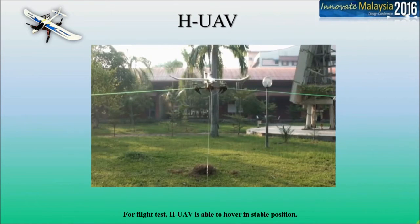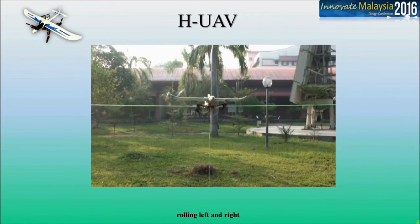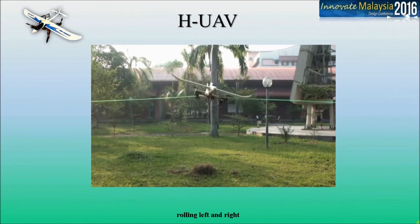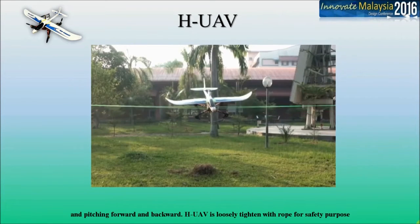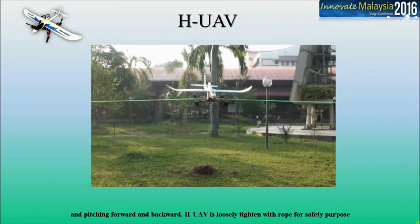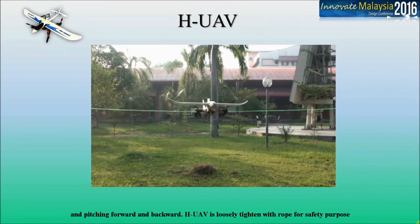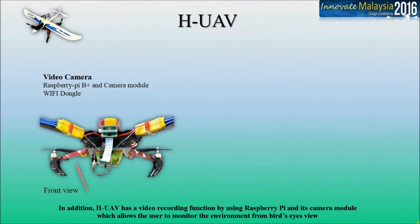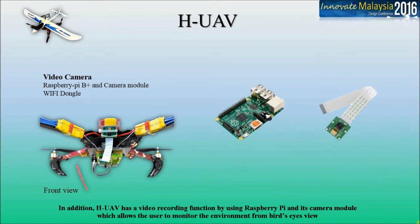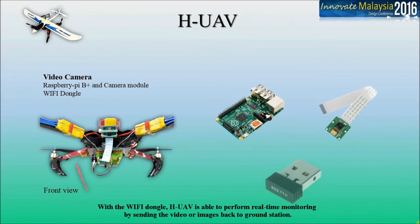For the flight test, HUAV is able to hover in a stable position, rolling left and right, and pitching forward and backward. HUAV is loosely tightened with rope for safety purposes. In addition, HUAV has a video recording function using a Raspberry Pi and its camera module, which allows the user to monitor the environment from a bird's eye view. With a Wi-Fi dongle, HUAV is able to perform real-time monitoring by sending video or images back to the ground station.